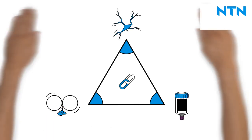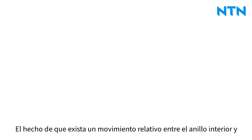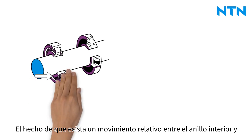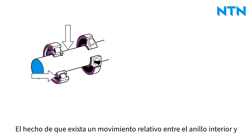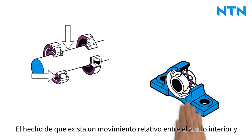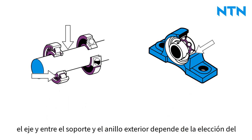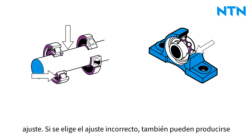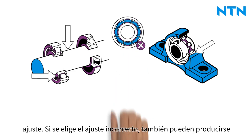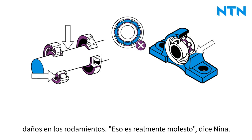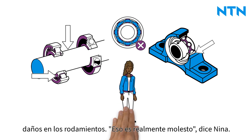Whether there is relative movement between the inner ring and shaft and between the housing and outer ring depends on the choice of fit. If the wrong fit is chosen, bearing damage can also occur. That's really annoying, says Nina.